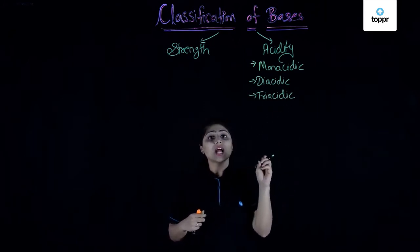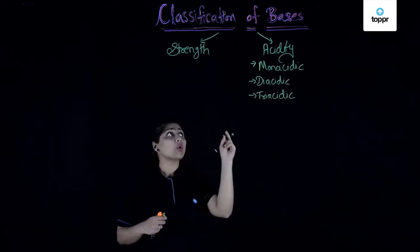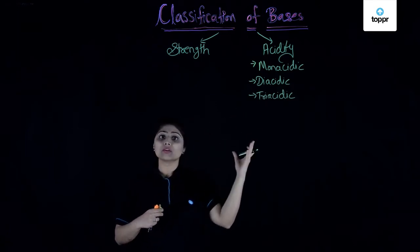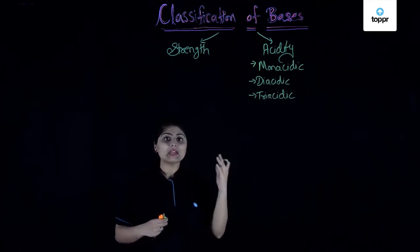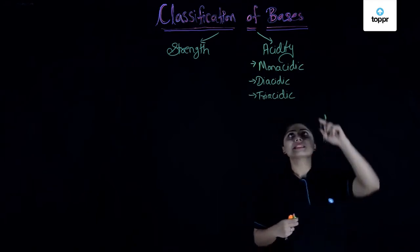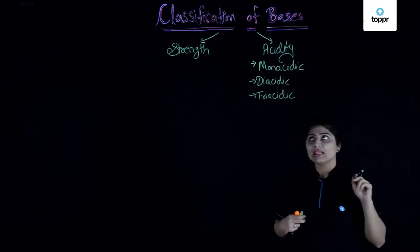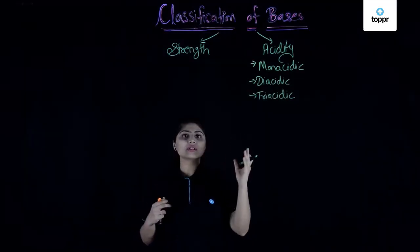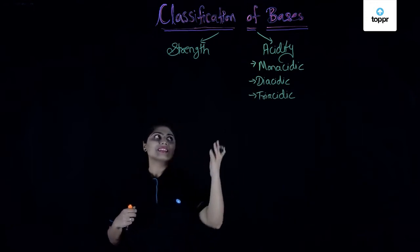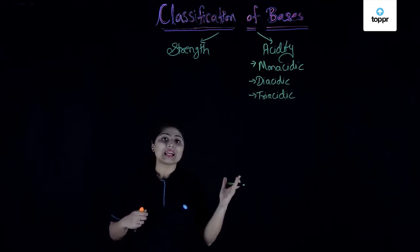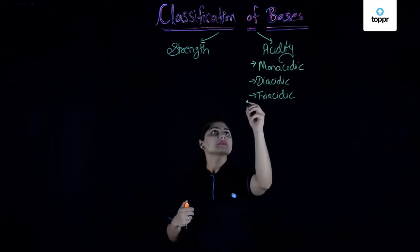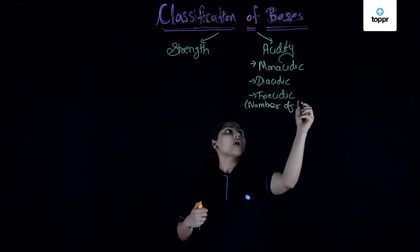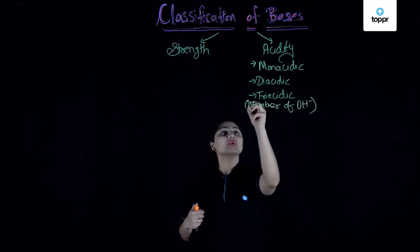Acidity is nothing but how many hydroxyl ions are present in one molecule of a base, and how many of those hydroxyls are to be neutralized by an acid. If one hydroxyl ion is to be neutralized, the base is monoacidic. If two hydroxyl ions are to be neutralized, it is diacidic. If three hydroxyl groups are to be neutralized, the base is called triacidic. So it depends upon the number of hydroxyl ions present in one molecule of a base.